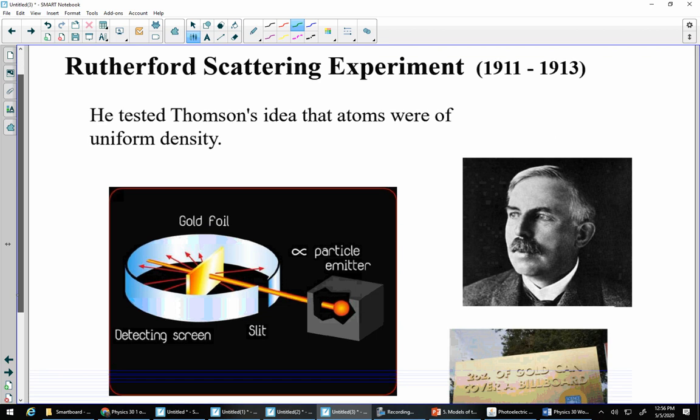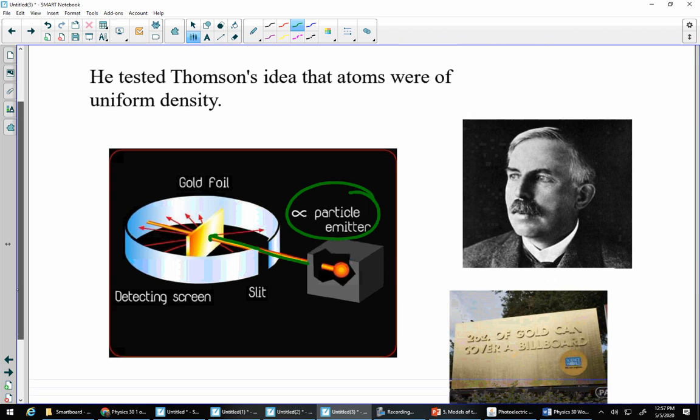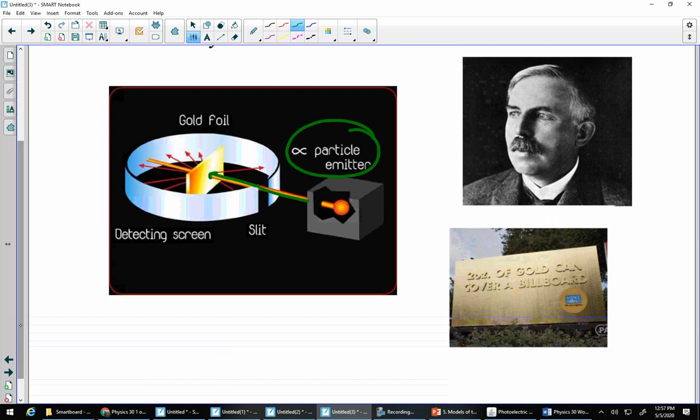So, the next person we want to talk about today is the Rutherford, or sorry, is Rutherford and the Rutherford Scattering Experiment. So, Rutherford tested the idea that they were uniform density. So, essentially what he did was he had something that would emit alpha particles, so a radioactive substance that emits alpha particles. He passes them through a slit, so they're all lined up nicely, and he blasted them at a very extremely thin, extremely thin gold plate, and then figured out what happened to those particles after. So, on the detecting screen they would show up, he would see where exactly they went.